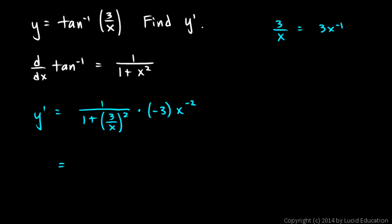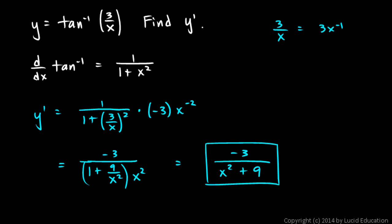So this is going to end up being a negative 3 up top over our denominator here, which is 1 plus 9 over x squared. And this x to the negative 2 right here can be an x to the positive 2 in the denominator. And so that simplifies. Negative 3, if we distribute this x squared across those two terms, we get x squared plus 9. And that's probably the simplest way to write it. Negative 3 over x squared plus 9.